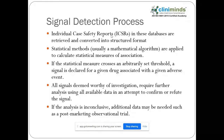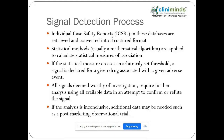Signal detection is mainly retrieved from ICSRs. Then statistical methods are used — we will talk about those later in the session. Statistical methods are used to see whether the events reported are actually representing a disproportionality.